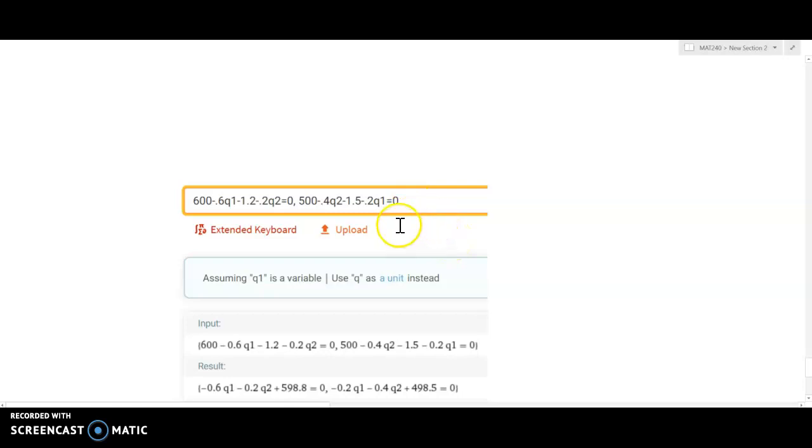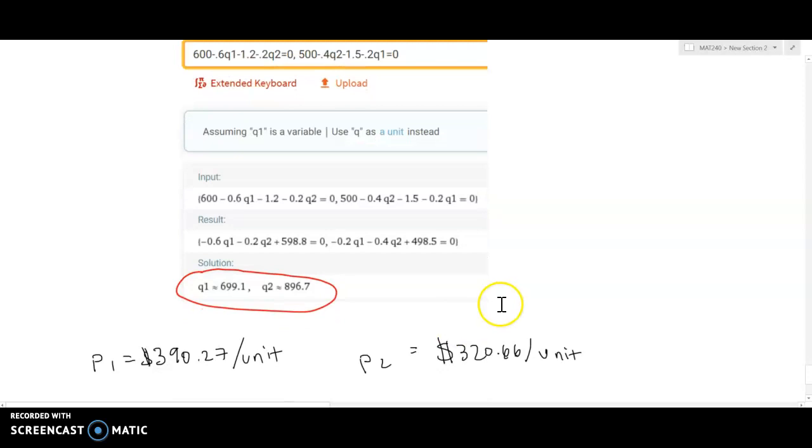I'm avoiding putting 0 equals 0 because that's a true statement no matter what, so you don't need that in there for unconstrained optimization. When we scroll down far enough, we see that the solution is q1, you should produce 699.1 units of product one and 896.7 units of product two.